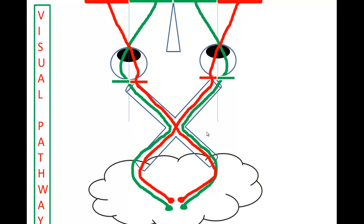If somebody has a pathology on the optic tract — so anterior to the optic chiasm is the optic nerve, and the optic nerve represents stimulus coming only from one eye — the optic tract, on the other hand, represents stimulation coming from the ipsilateral side as well as the contralateral side. This is an important concept to understand.